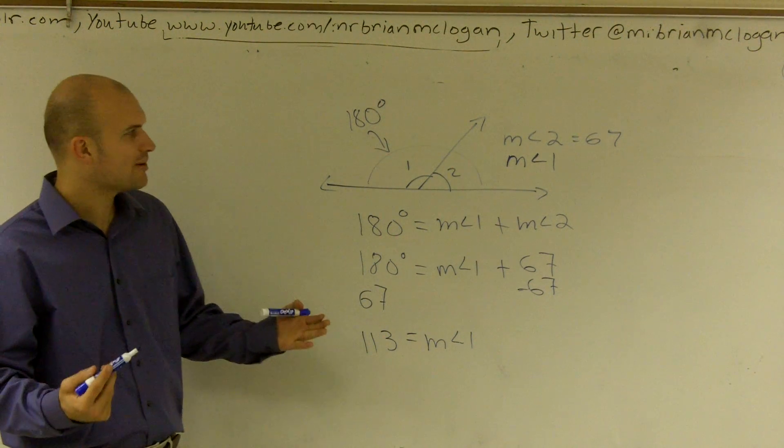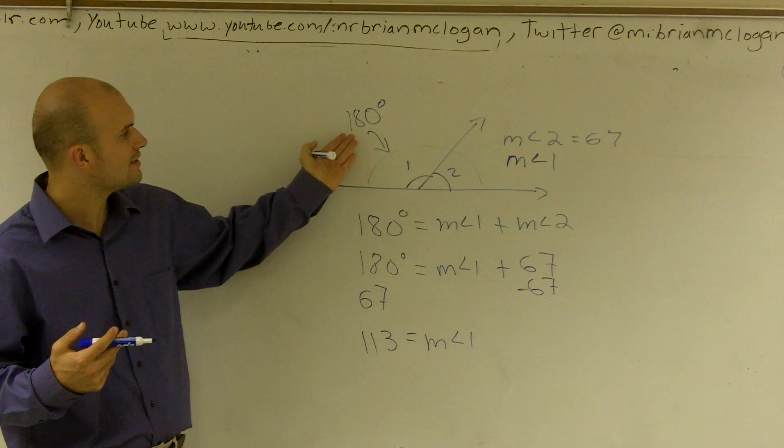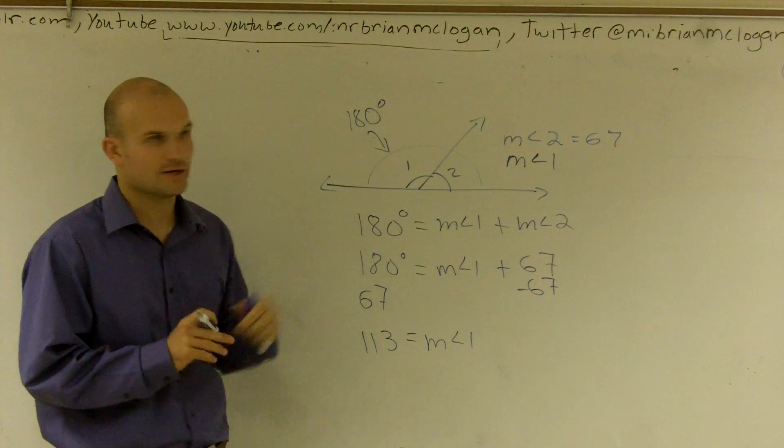So just remember, when we're talking about a linear pair, a linear pair is two angles that add up to make you a straight angle, and a straight angle is 180 degrees. And there you go.